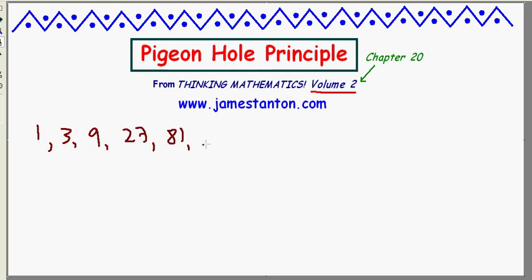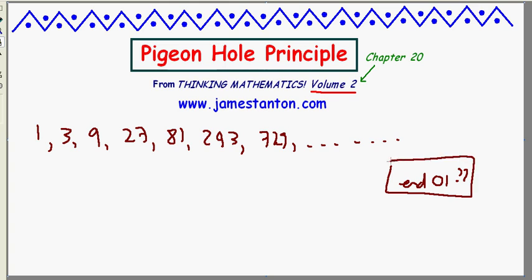Here are the powers of 3. 1, 3, 9, 27, 81, 243, 729, and so on. And I want to know, do any of these powers of 3 ever end in 01? So I want to know, do they end in 01? And I can actually use the Pigeon Hole Principle to solve this. And I'm going to do it. Here goes.